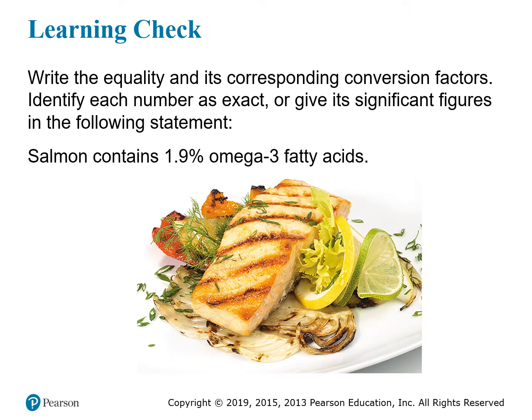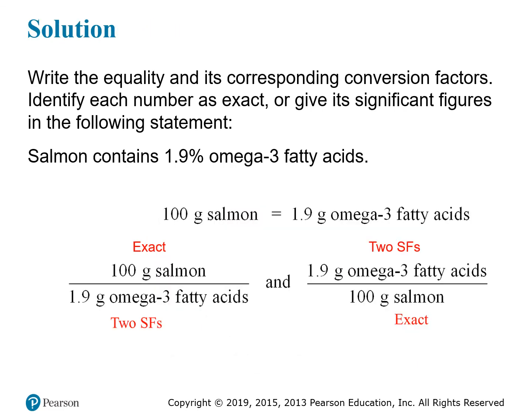For this situation, we want to write down the equality and the corresponding conversion factors. The statement is that salmon contains 1.9% omega-3 fatty acids. The 1.9% omega-3 fatty acids in salmon tells you the part as a fraction of the whole — the part is the fatty acids, and the whole is the salmon that contains them. So the whole for a percentage is 100 grams of salmon, and the percentage tells you the part is 1.9 grams of omega-3 fatty acids. For every 100 grams of salmon, you get 1.9 grams of omega-3 fatty acids. From this equation, we can get two conversion factors: 100 grams of salmon per 1.9 grams of omega-3 fatty acids, or the opposite, 1.9 grams of omega-3 fatty acids per 100 grams of salmon.